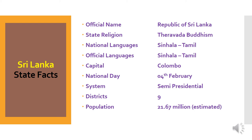Here are some facts about Sri Lanka. Official name: Republic of Sri Lanka. State religion: Theravada Buddhism. National languages: Sinhala, Tamil. Official languages: Sinhala, Tamil. Capital: Colombo. National day: 4th February. System: semi-presidential. Districts: 9. Population: 21.67 million, estimated.